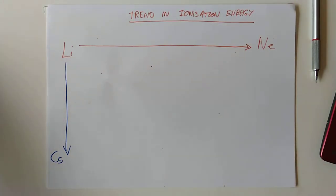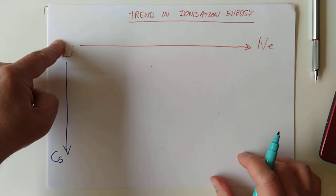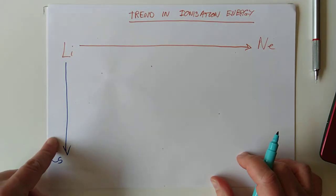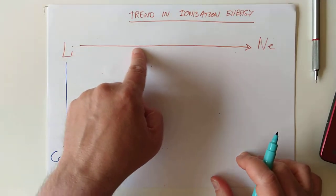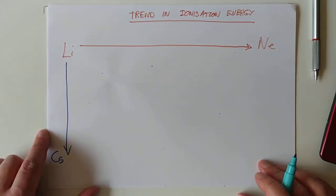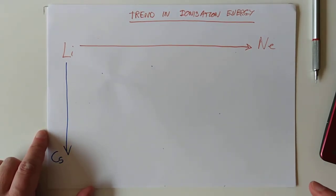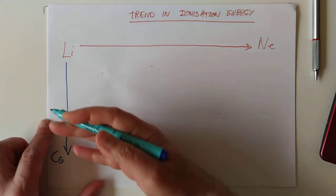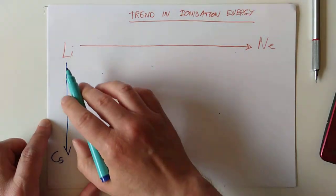I'll leave you again. Feel free to pause the video. See what you think. Do you think it's going to be more difficult or easier to pick off the outer electron as you go down and also as you go across? I'll give you a hint. If you think about the previous trend in atomic size, you might be able to work it out.